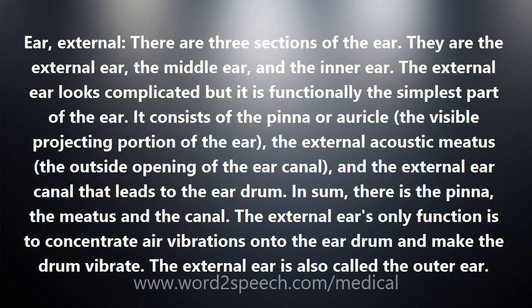The external ear looks complicated but it is functionally the simplest part of the ear. It consists of the pinna or auricle, the visible projecting portion of the ear, the external acoustic meatus, the outside opening of the ear canal, and the external ear canal that leads to the eardrum.